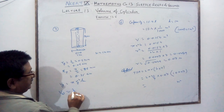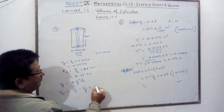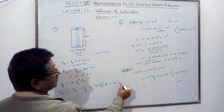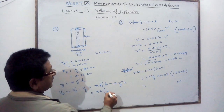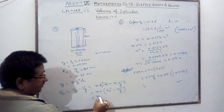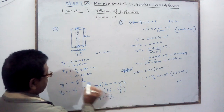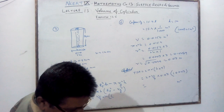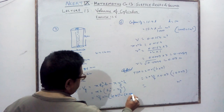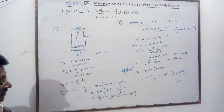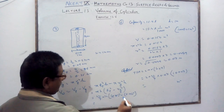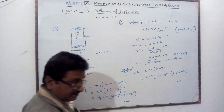Volume of wood = Volume of pencil − Volume of graphite = πr_pencil²h − πr_graphite²h = πh(r_pencil² − r_graphite²). Putting in values: (22/7) × 14 × (0.35² − 0.05²). Use the formula a² − b² = (a+b)(a−b) and simplify. The answer will be in centimeter cube — that is the volume of wood.